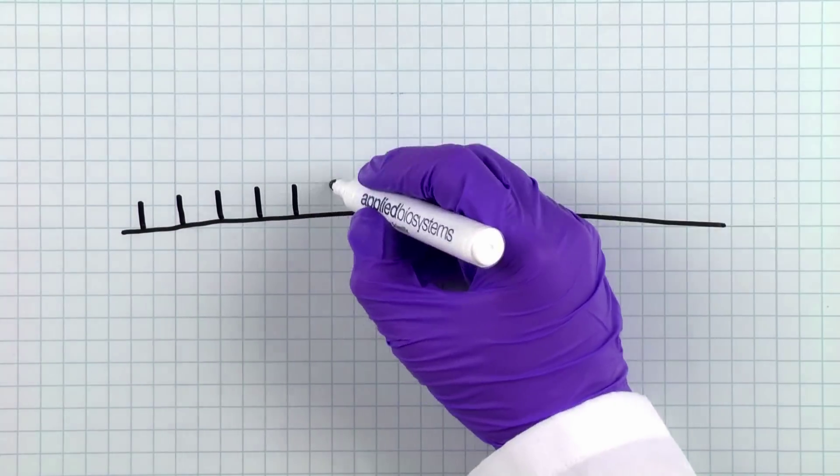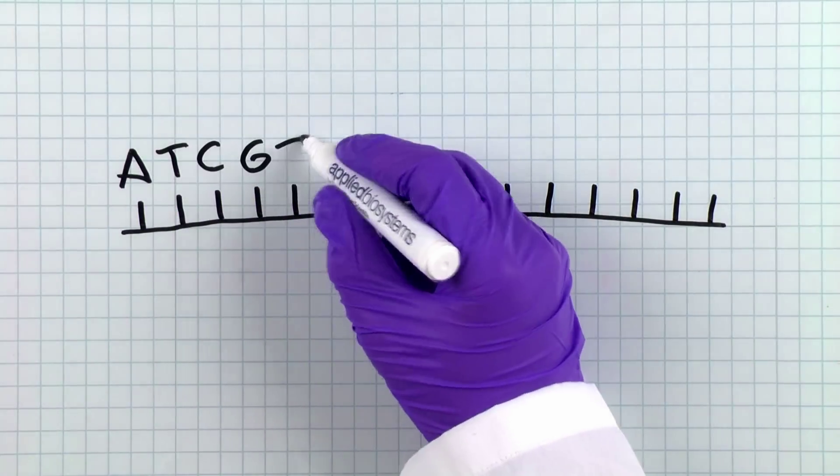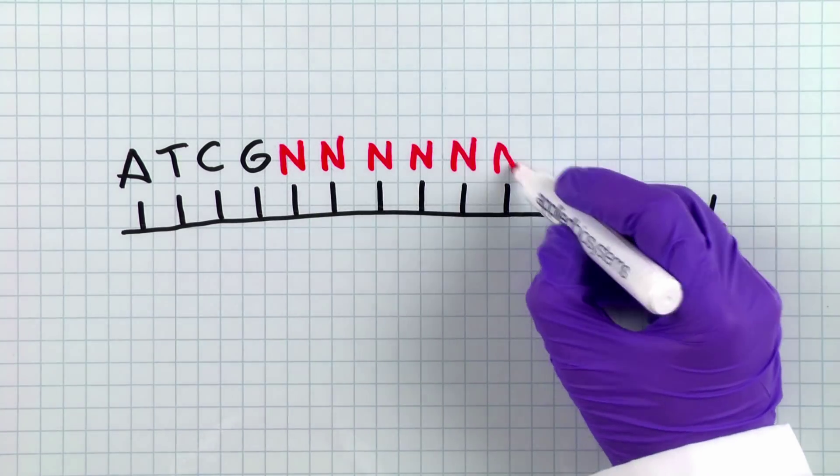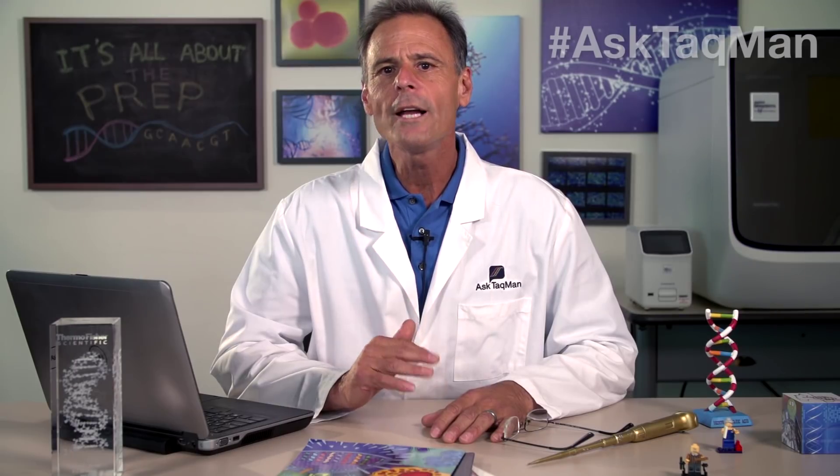We definitely want to avoid that. The other important thing to mask in your target sequence is repeats. Repeats are patterns of DNA sequence that occur in multiple copies throughout the genome. Assays designed in regions that contain repeats are likely to produce non-specific amplification. We want our assay to detect our SNP in our unique region of the genome, not bind to other areas of the genome.